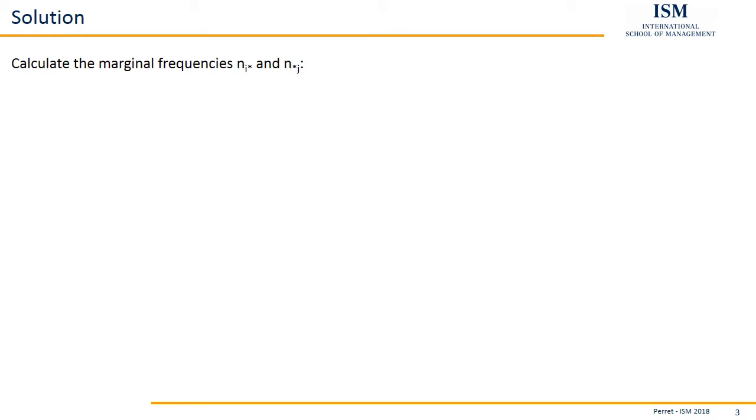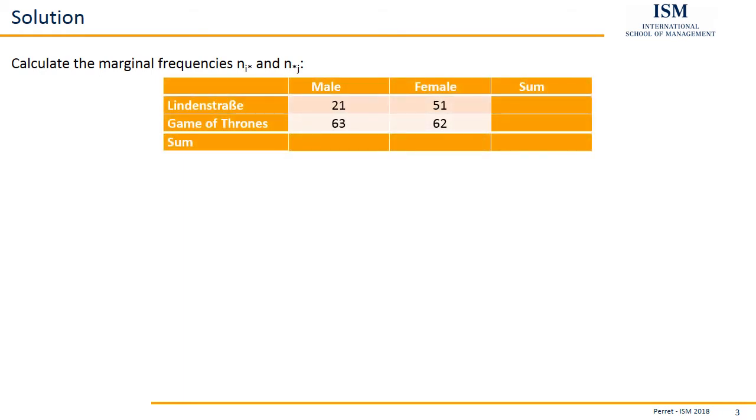What are we going to do first? First off, we copy the table and then add one row and one column where we can calculate the marginal frequencies. Marginal frequency basically means we take the sum of each column and the sum of each row. For example, here for males we have 84 males, we have 113 females, we have 72 people who mention Lindenstrasse and we have 125 people who mention Game of Thrones. If we summarize all of them, we see we have 197, that's the 197 observations or interviews which were mentioned in the exercise description.